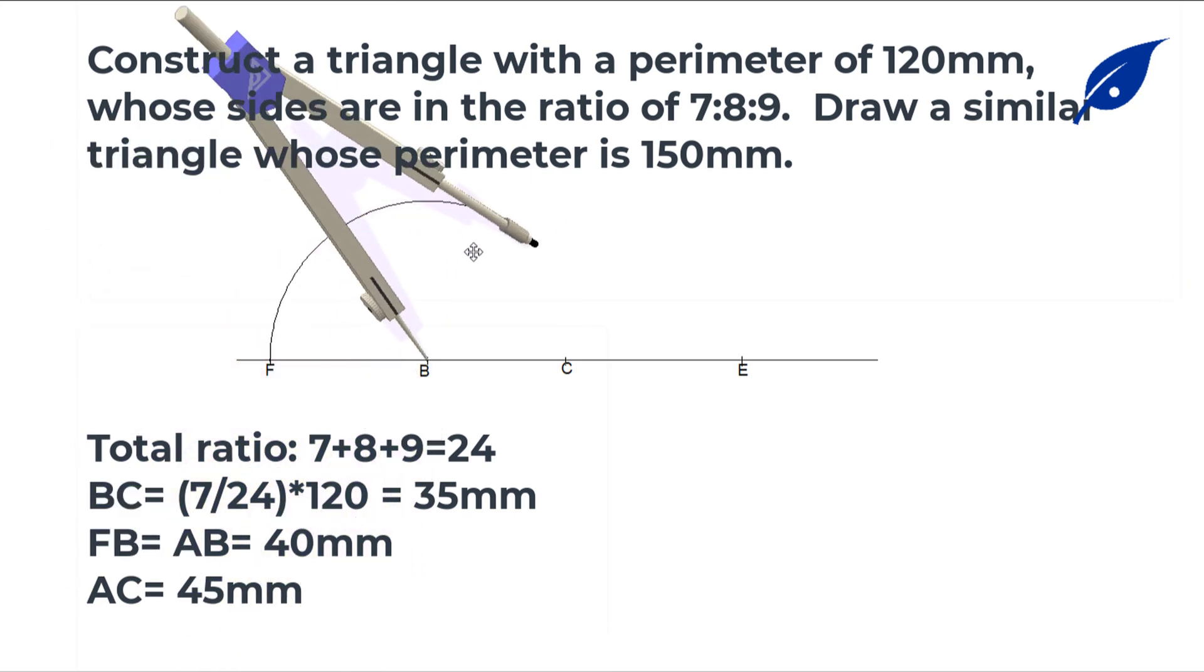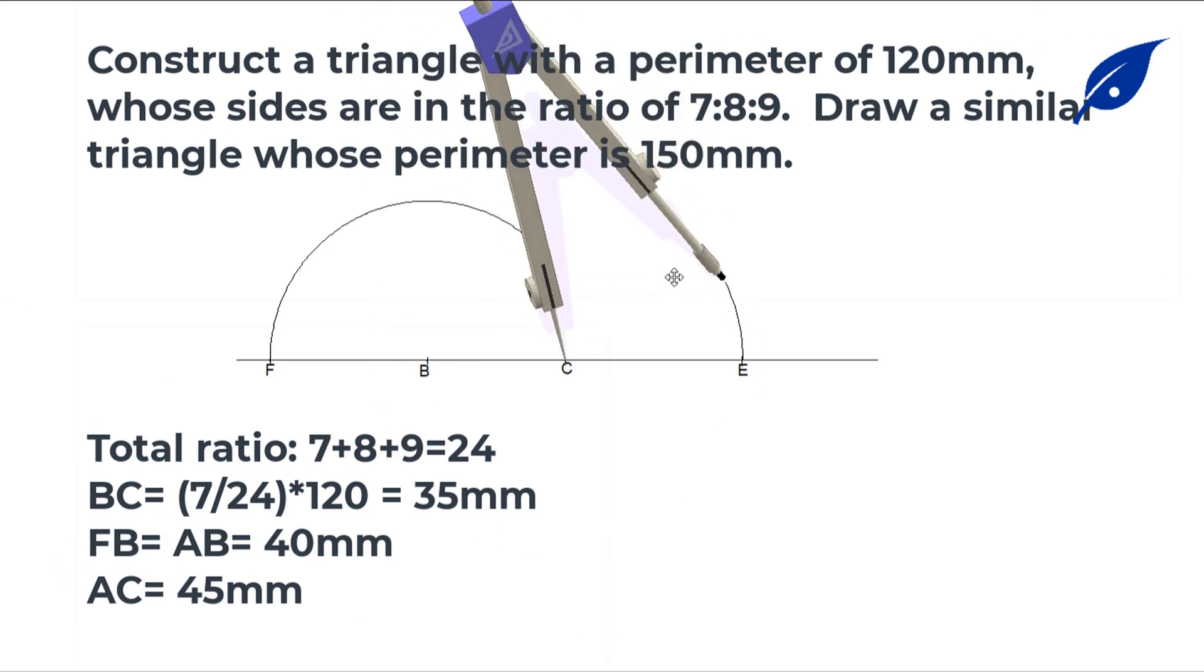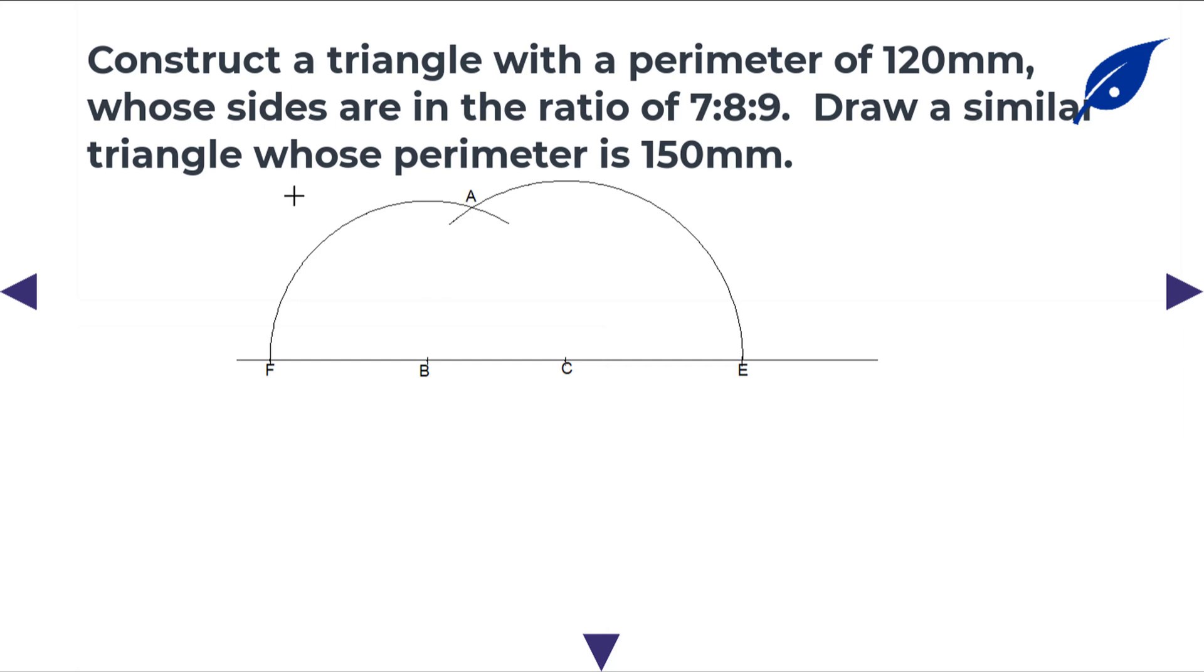With a radius of 40 millimeters and center at B, describe an arc. With a radius of 45 millimeters and center at C, describe an arc. Where these two arcs meet, we form point A.